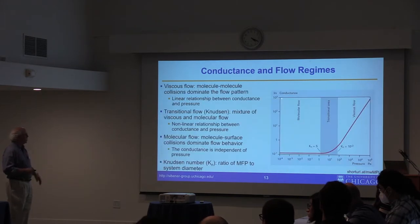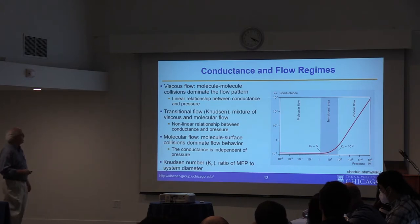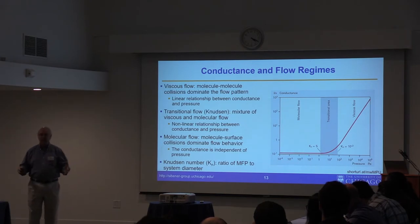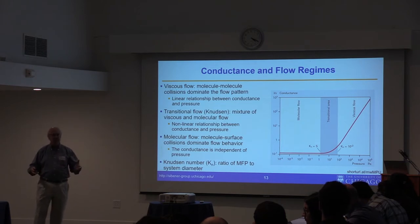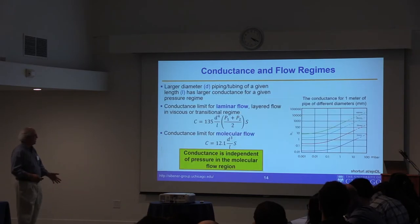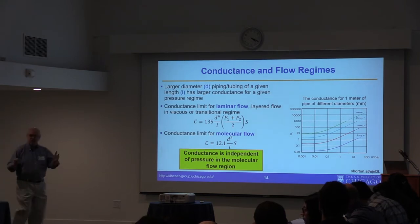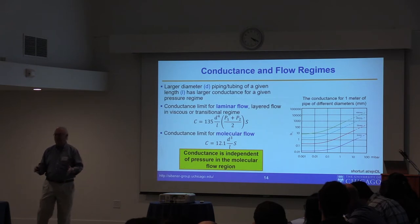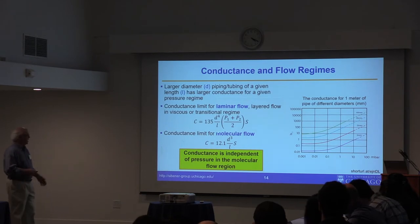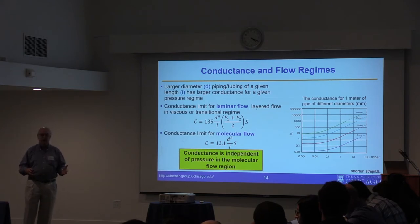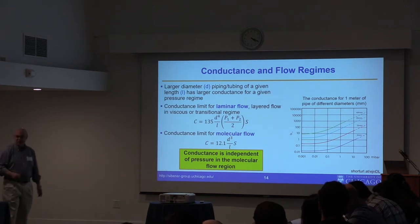You have different flow regimes characterized by Knudsen numbers, and molecular flow can dominate in different ways. It's connected with the mean free path. Sizing the plumbing with the pumps and with the experiment is a system — mess up one part and the whole system suffers. In the laminar flow regime, conductance scales as the fourth power of diameter. In the molecular flow regime it drops to D cubed, so there's a different scaling for particle flow through confined tubing. If you're building a machine the size of a room, you really want to get this right.